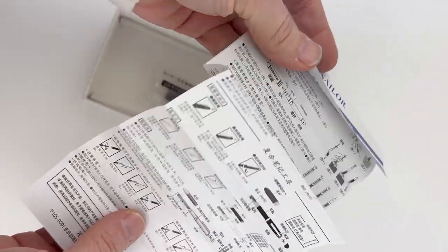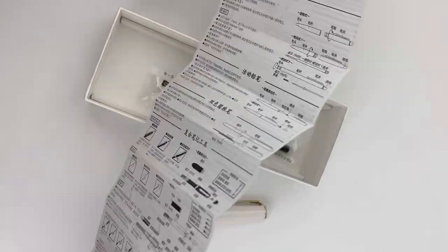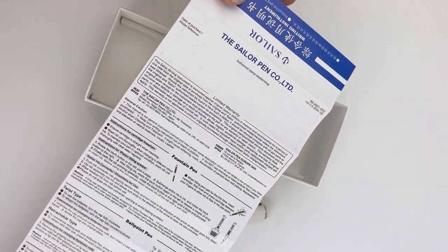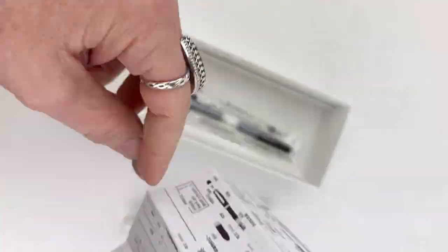Sailor is pretty thorough about giving you all the information that you need, so I would suggest always hanging on to this information in the box if you keep your box, or if you don't, just at least hang on to that information.